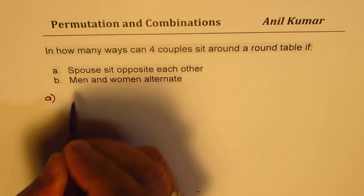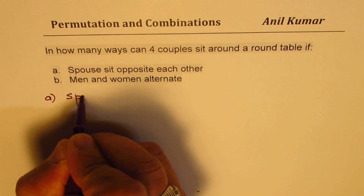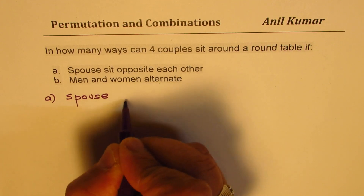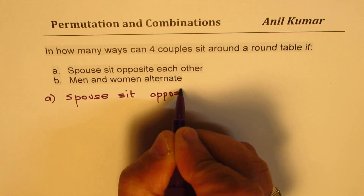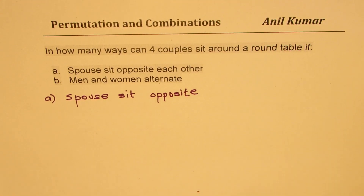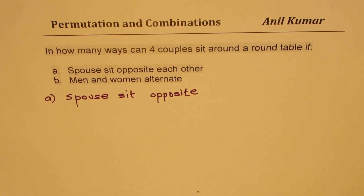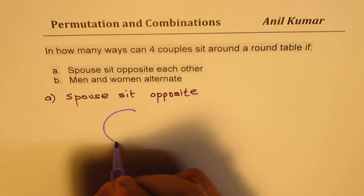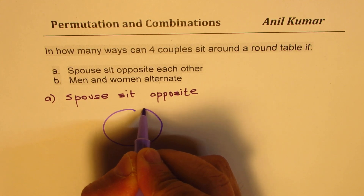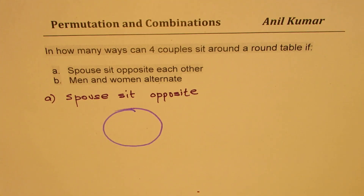Case A: when spouses sit opposite. Now whenever you're talking about round tables, there are some positions which are exactly the same since relatively the person on left and right is the same person. So in these examples we have to fix a person at one spot and then work out the combinations. That is very critical to understand.